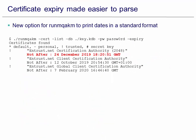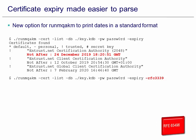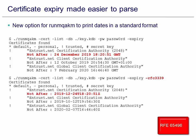It's now easier to check the expiry date of certificates. There's been an option to the command runmqakm to show the expiry dates, but this has always been displayed in a locale-specific way. By adding a new option to the command, we can see this in a locale-independent way, which is much easier for sorting, making it easier to see which certificates are soon to expire.